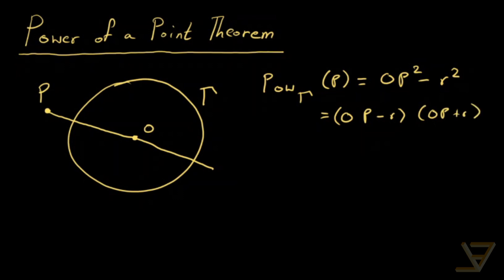So notice that OP plus R is this segment here, and OP minus R is equal to this segment here. So really what we're doing is that we're taking the first part of the segment and we're multiplying it by the whole second segment from P to the other end. So that is called the power of a point P. But that's not the theorem in itself. That's just the definition.